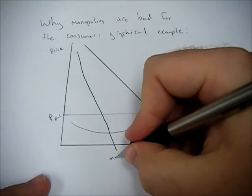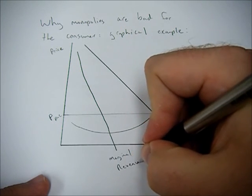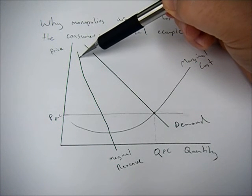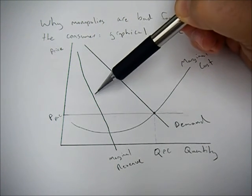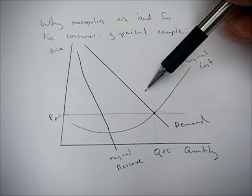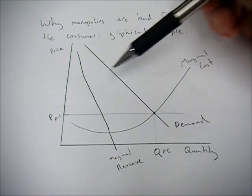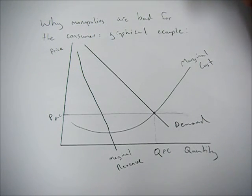So what this marginal revenue curve means is if the monopoly sells one more unit of the good, they're going to make this much more revenue from selling that good. And this is derived from the demand curve; it's roughly twice the negative slope of the demand curve. But this is what the monopoly pays attention to.